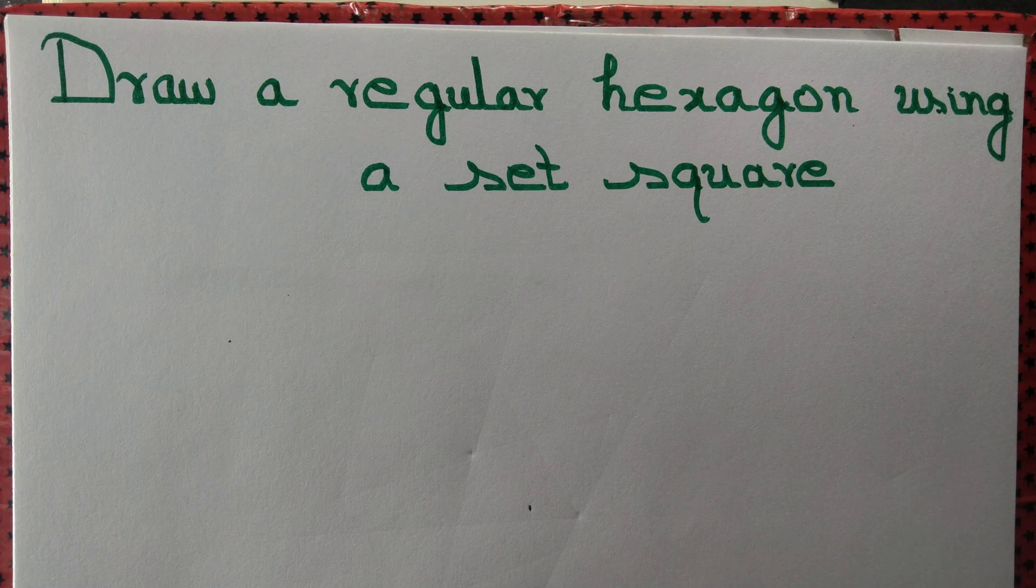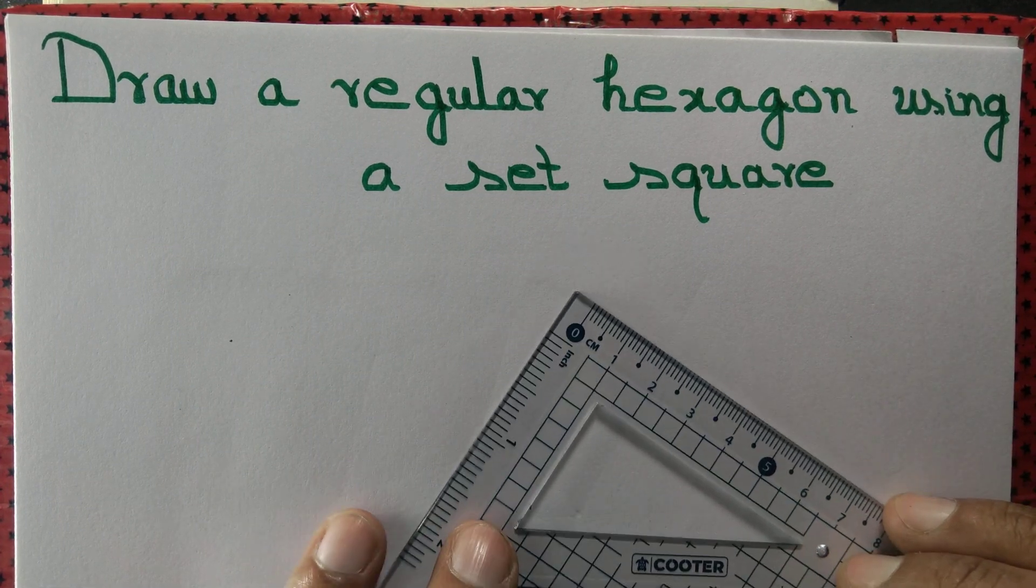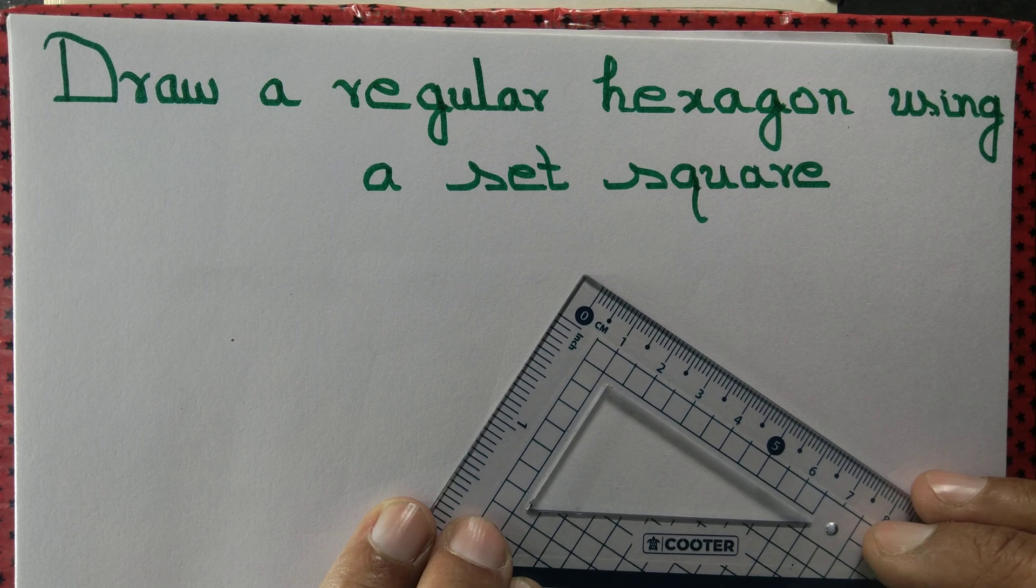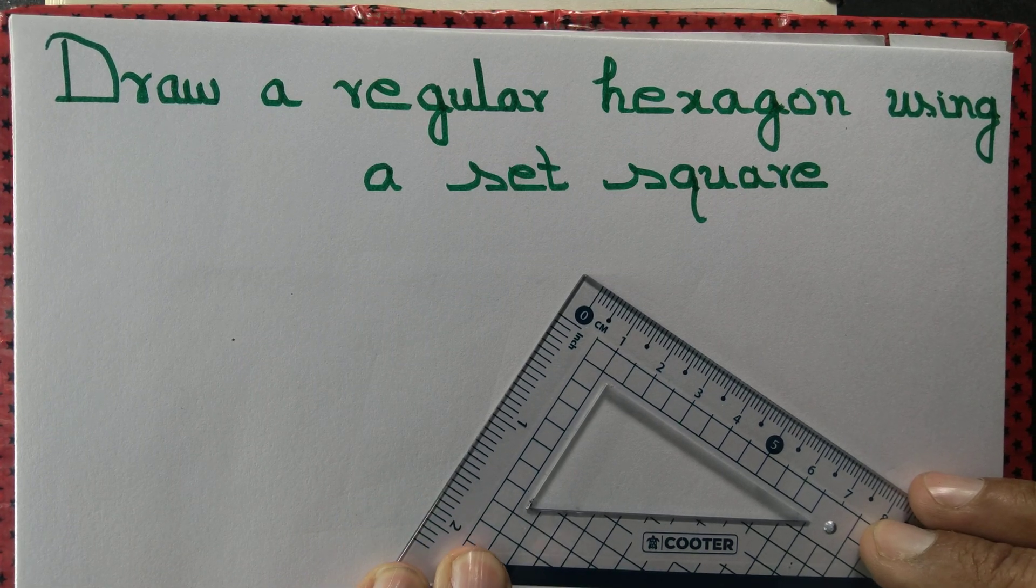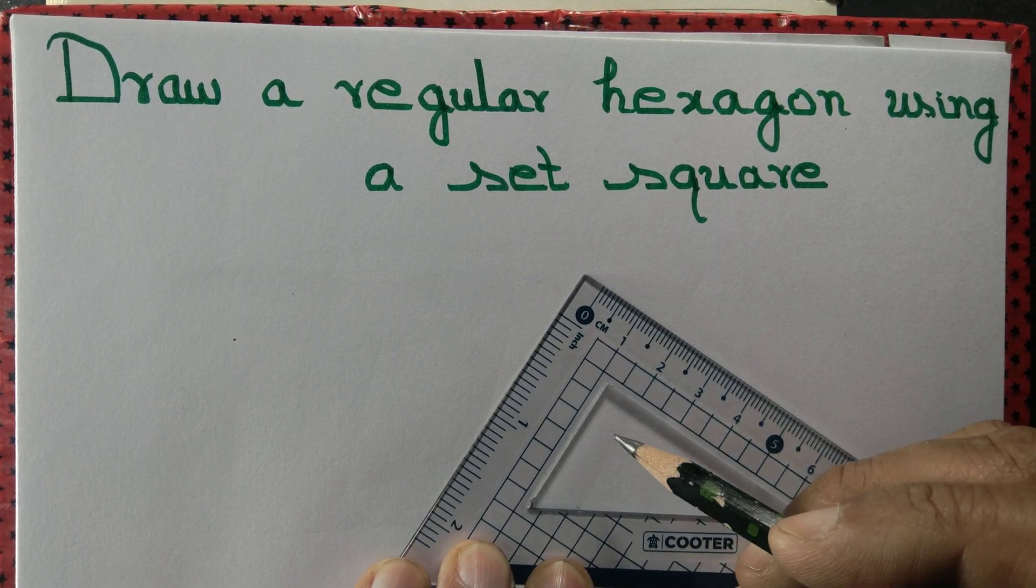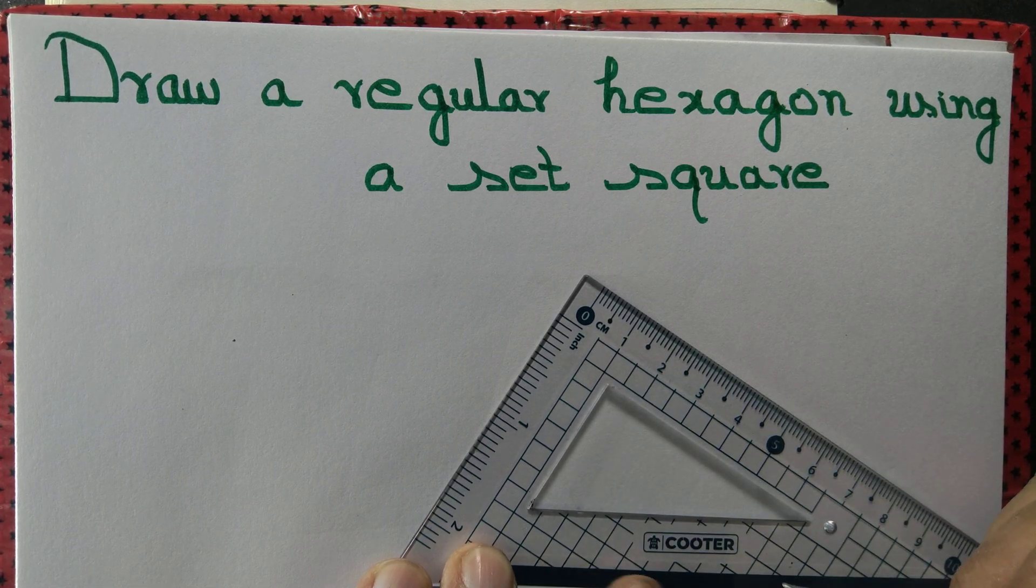Let us draw a regular hexagon using a set square. We have a set square with one of the angles measuring 60 degrees.